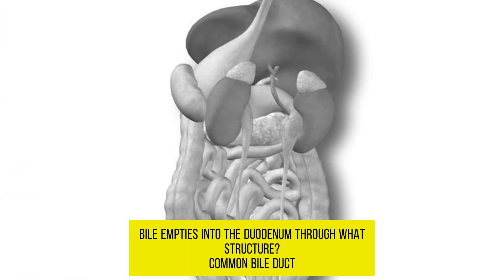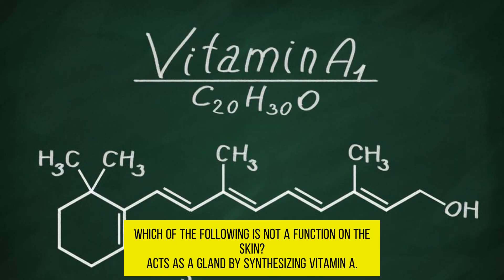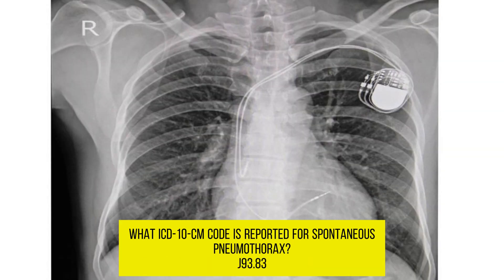Bile empties into the duodenum through what structure? The common bile duct. Which of the following is not a function of the skin? Acts as a gland by synthesizing vitamin A. What ICD-10-CM code is reported for spontaneous pneumothorax? J93.83.